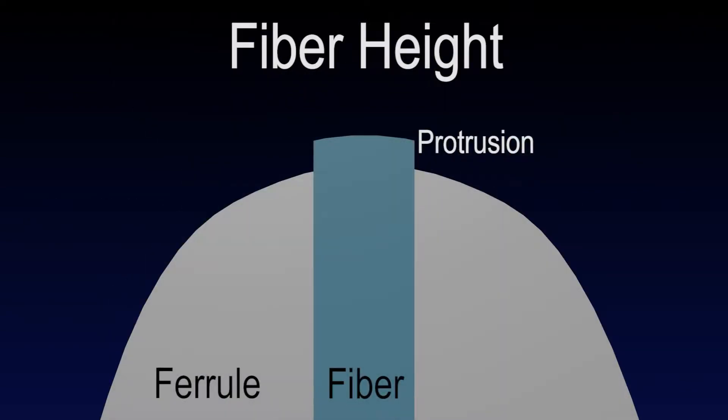Fiber height is the difference in height of the center of the fiber and the theoretical height of the ferrule where its center would be if its end-face were a continuous sphere. Standards allow fiber height to vary depending on the measured radius of curvature.